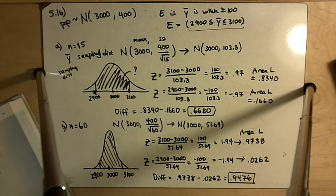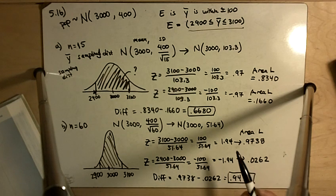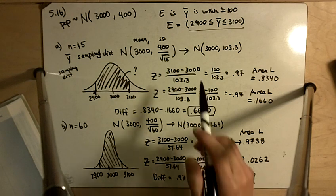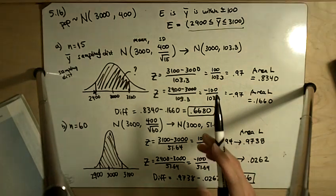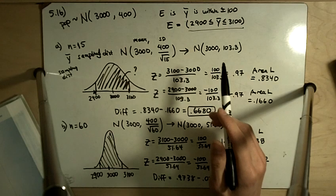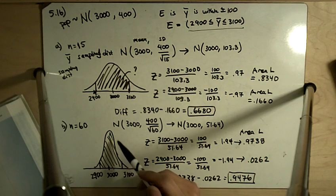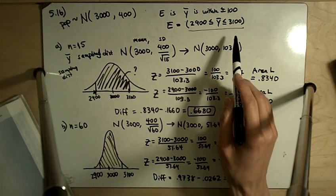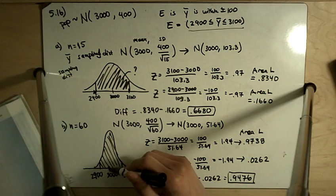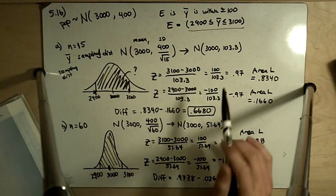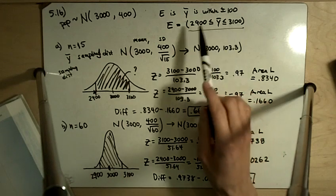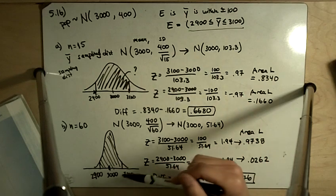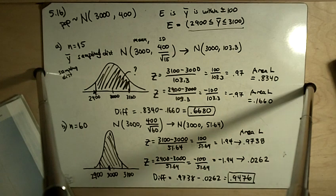So part C says, how does the probability of E depend on sample size? That is, as N increases, does probability of E increase, decrease, or stay the same? And the answer is, as N increases, the probability of event E increases. And that's because when we make our sample size larger, our sampling distribution gets more and more narrow, or more and more skinny, it gets closer and closer to the mean. Everything gets squished closer to the mean. And so the probability that it's going to be within 100 units of the mean increases.